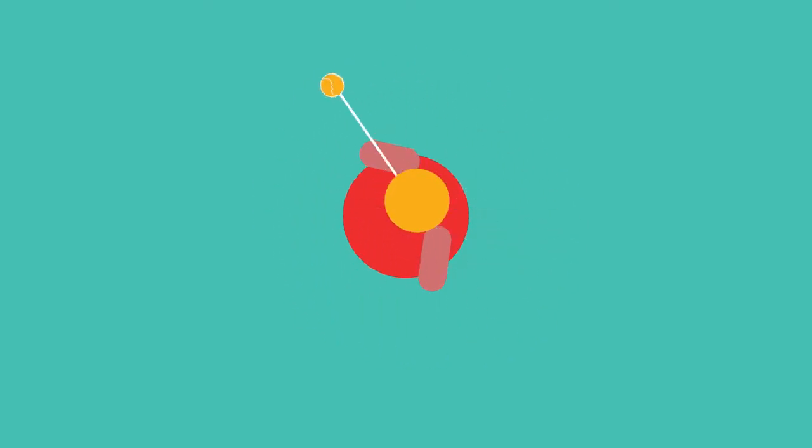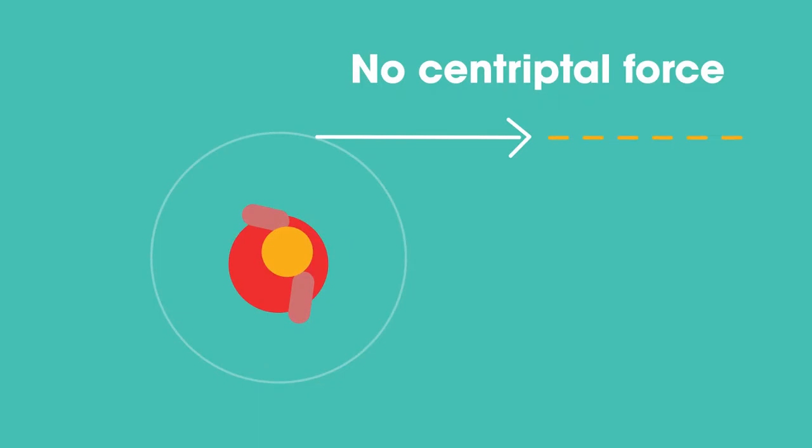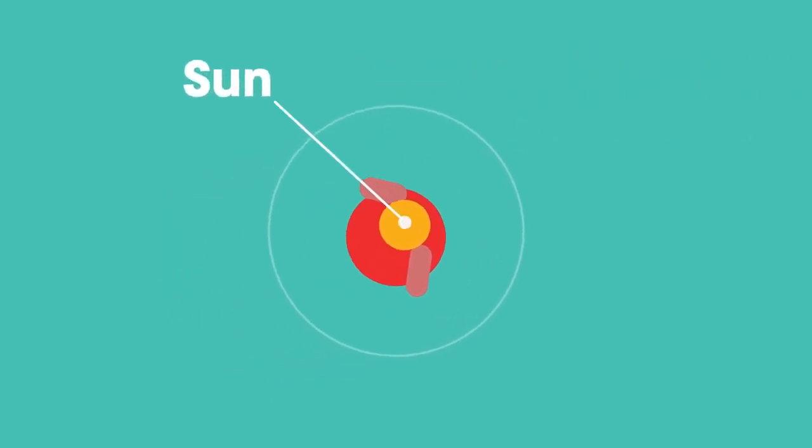The string pulls the ball into the circular orbit. However, if you let go of the string, no more centripetal force. The ball just continues in a straight line. Now think of you as the sun and the ball as a planet.